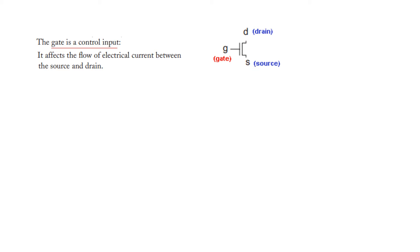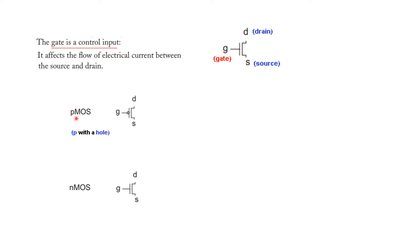The symbol for what is called an N-type channel is shown here. The gate is a control input, controlling the flow of electrical current between the source and drain. There are two types: PMOS and NMOS — P-type and N-type MOSFETs. To remember the symbols: P-type MOS has a hole or inverter sign, while in N-type the signal is directly applied.